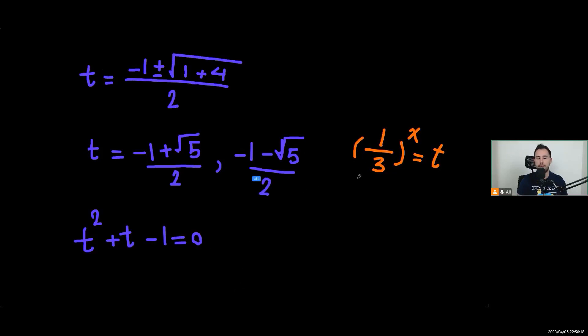Now one thing here, let's pay attention. t equals 1 over 3 to power of x, but we know that this is always positive, it's always bigger than 0. But this one, the value of t negative 1 minus square root of 5, is always negative. So we cannot accept this one, so this solution is what we're looking for.